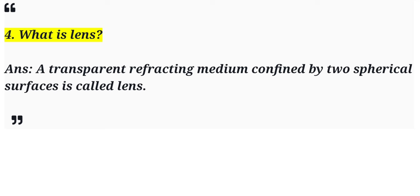So, the first question is: what is a lens? Why is it important? A lens is a transparent refracting medium that is confined by two spherical surfaces. It has two spherical surfaces — that is called a lens. Lens is of two types: that is concave lens and convex lens.